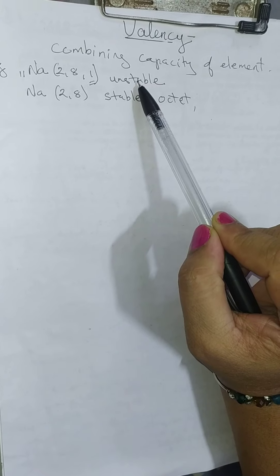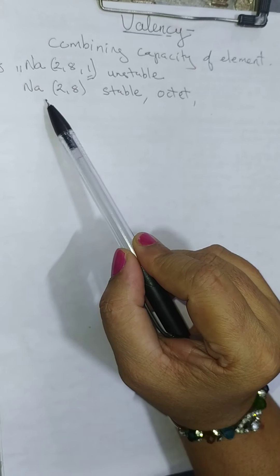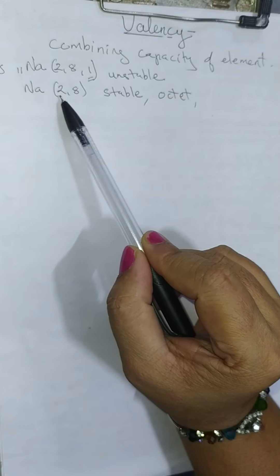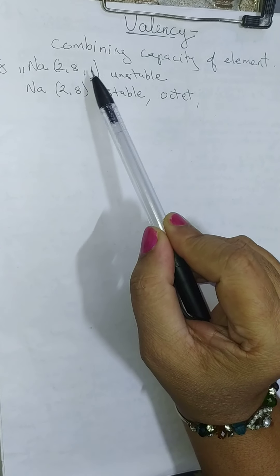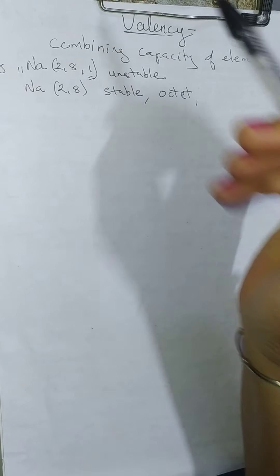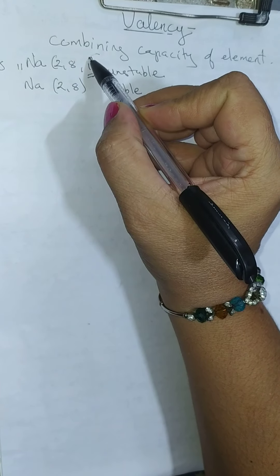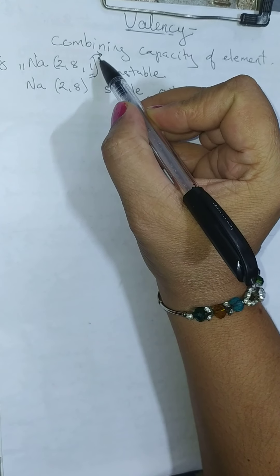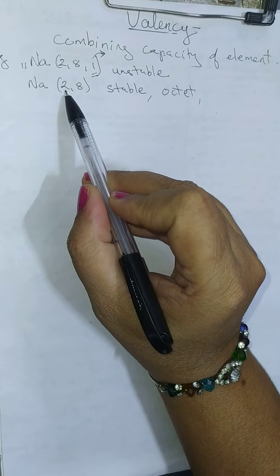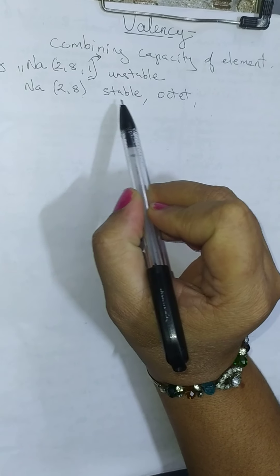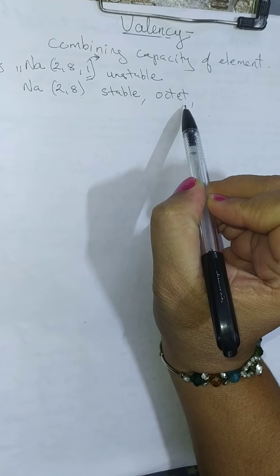Every element tries to become stable. So this sodium atom has to donate one electron. If it gives one electron, its electronic configuration becomes 2, 8. Now it is stable, as its octet is complete.